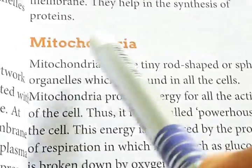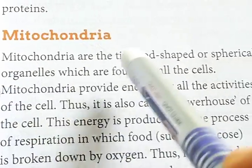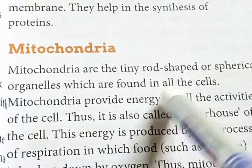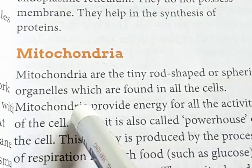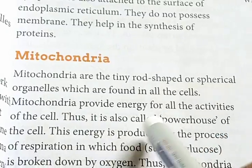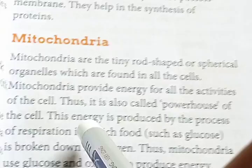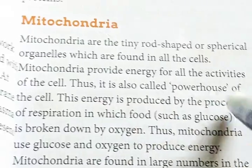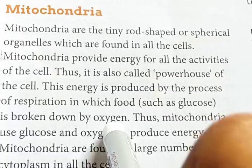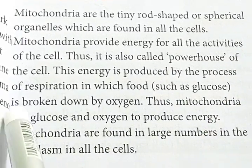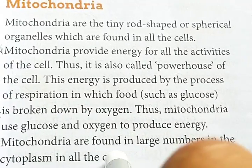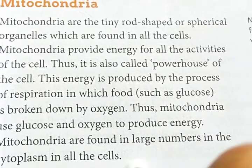Next, mitochondria. Mitochondria are tiny rod-shaped or spherical organelles which are found in all the cells. Mitochondria provide energy for all the activities of the cell; thus, it is called the powerhouse of the cell. This energy is produced by the process of respiration in which food is broken down by oxygen. Thus, mitochondria use glucose and oxygen to produce energy, and are found in large numbers in the cytoplasm.